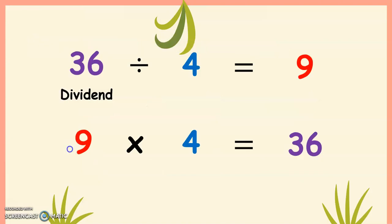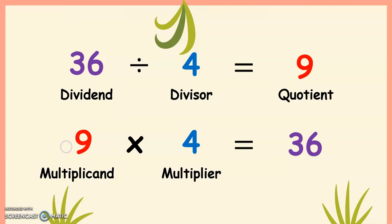36 in the division sentence is the dividend divided by 4 as the divisor, giving us 9 as the quotient. 9 is the multiplicand times 4 as the multiplier, giving us 36 as the product.